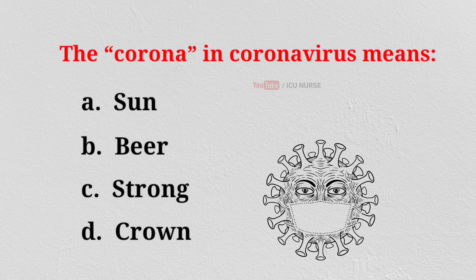The corona in coronavirus means? A. Sun. B. Beer. C. Strong. D. Crown. And the correct answer is?